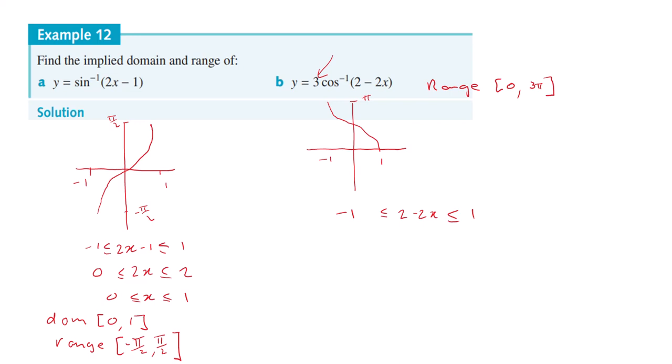So what we're going to do is the algebra for it. Subtract 2 from both sides and you'll get -3 is less than or equal to -2x which is less than or equal to -1. And now we'll divide by -2, but remember reverse the signs when you divide by negative.